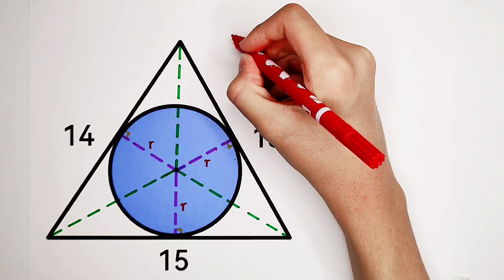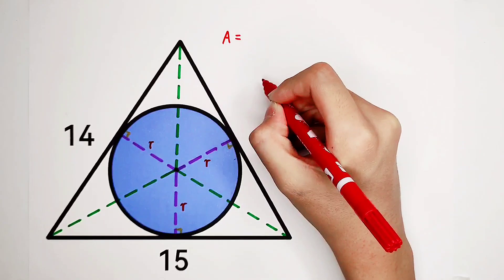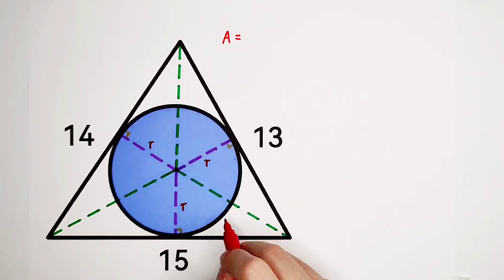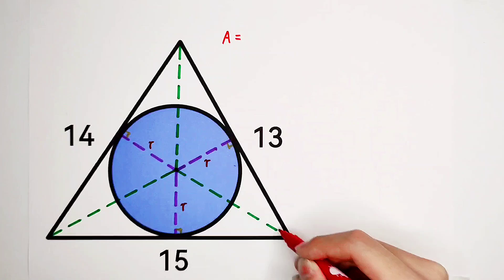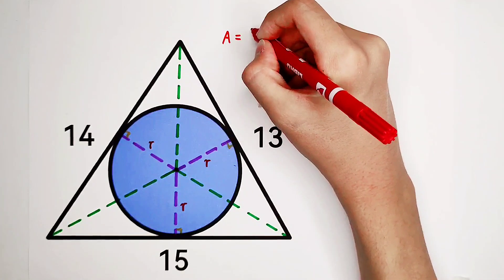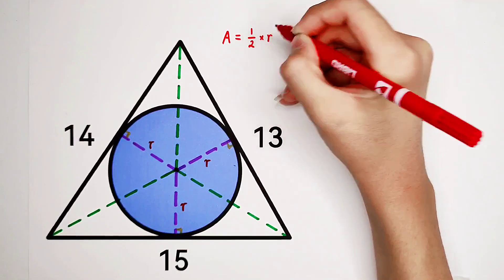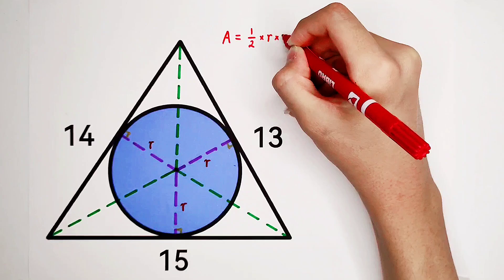The area is going to be, look, the area of this small triangle is 1 over 2 times R, then times 13.